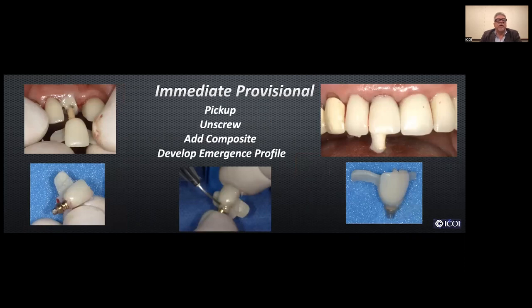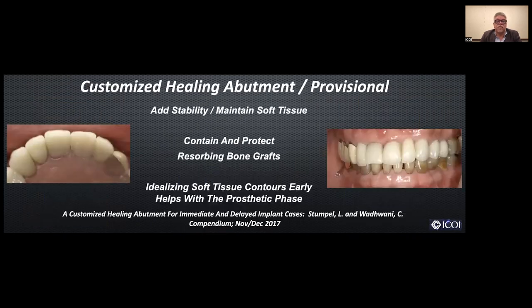You inject pickup material around the coping and into the crown, pick that up, unscrew the provisional, then use flowable composite to make your emergence profile. An article by Dr. Stompel and Wadwani discusses how a custom healing abutment or provisional helps maintain soft tissue and gives soft tissue stability. They also contain and protect bone grafts and idealize soft tissue early on, helping with the prosthetic stage. We always tell the patient ahead of time that the temporary will be a little shorter than the adjacent teeth and can't be in function, but it's better than a removable appliance.